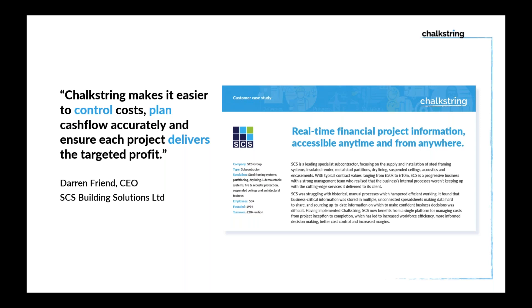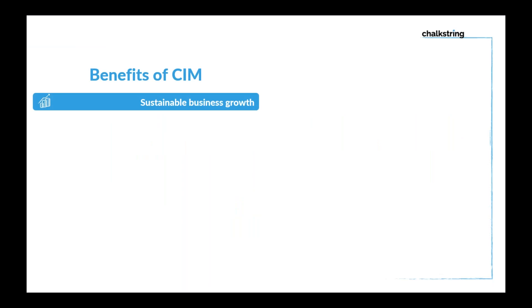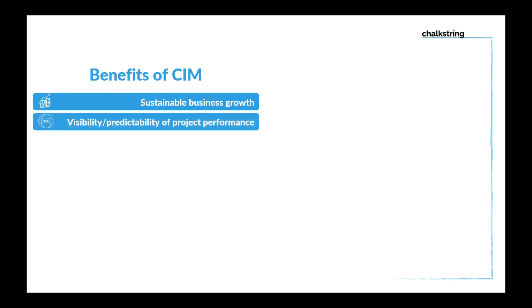In summary, there are two aspects: CIM as a philosophy, and Chalkstring as the technology. Chalkstring is simply a technology that helps you achieve CIM. As a philosophy, CIM is about sustainable business growth — delivering more with less, scaling the business, taking on bigger projects with a smaller team without ramping up overheads. It's about giving you that finger on the pulse predictability and instant visibility of every project — how they're performing. If they're going well, great. If they're not, drill in, find out why, and do that in a timely way before it's too late.